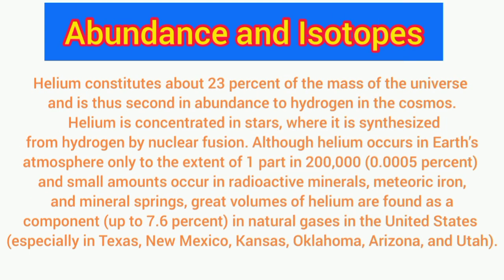Now, abundance and isotopes. Helium constitutes about 23% of the mass of the universe and is thus second in abundance to hydrogen in the cosmos. Helium is concentrated in stars, where it is synthesized from hydrogen by nuclear fusion. Although helium occurs in Earth's atmosphere only to the extent of one part in two lakh, that is 0.0005%.